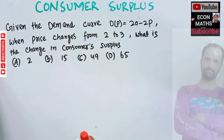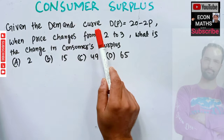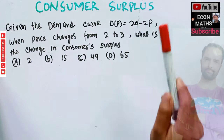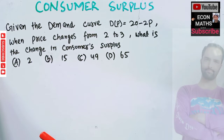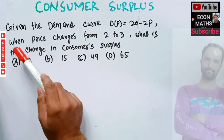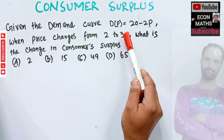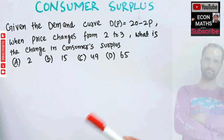In this video we will solve a problem on consumer surplus. The question is: given the demand curve D(p) = 20 minus 2p, where p denotes the price, when the price changes from 2 to 3, what is the change in consumer surplus?